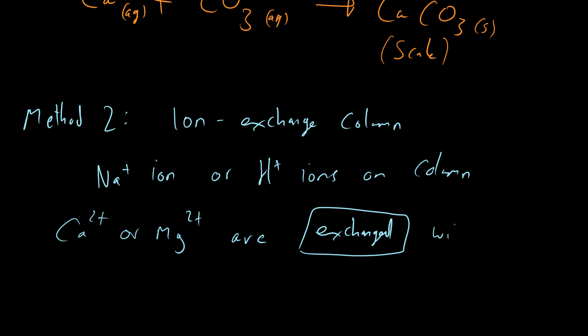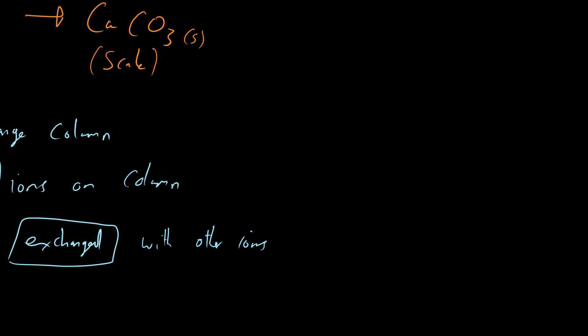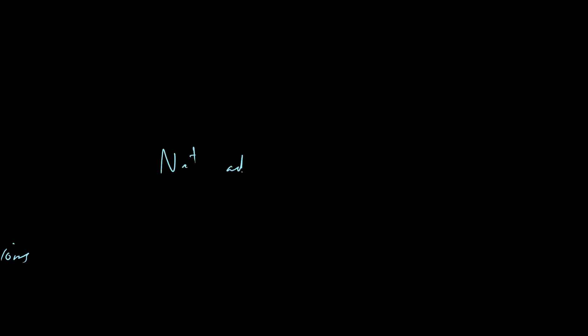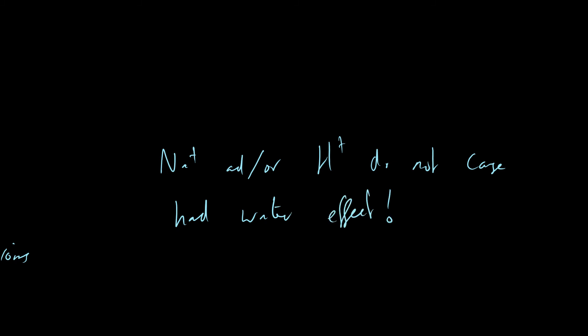Why do we do this? Because sodium ions and hydrogen ions don't make the water hard. So if we swap them, the water has gone from being hard — containing calcium and magnesium ions we don't want — to being soft, because it now contains ions that don't make the water hard. We've basically turned permanent hard water into soft water.